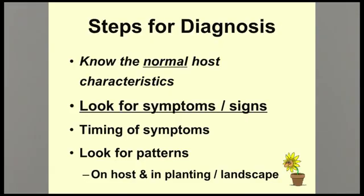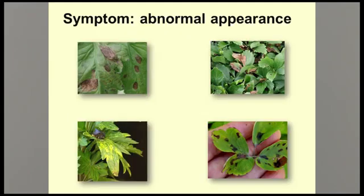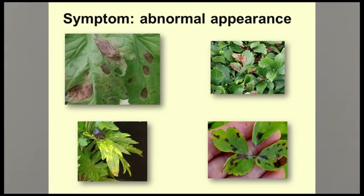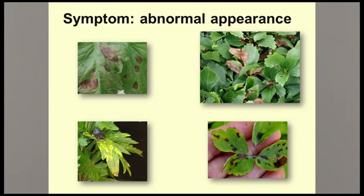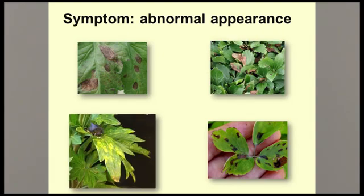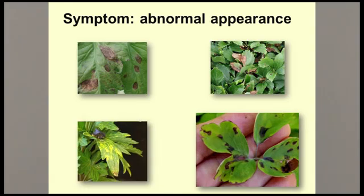Next, we need to determine what the symptoms are and look for evidence of any signs of the pathogen. A symptom is any abnormal appearance of the plant. Symptoms can include leaf spots, as shown in the tomato leaf with early blight in the upper left; dead areas or blotches, as shown in the pachysandra with volutella blight in the upper right; a mottled appearance, as shown in the lower left of a virus infection in a monk's hood leaf; or angular leaf spots limited by the veins, as shown on the columbine leaf in the lower right.